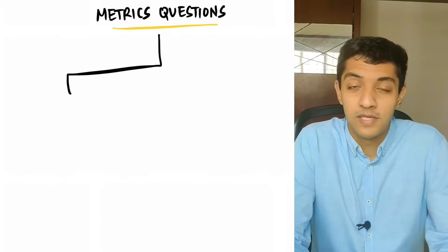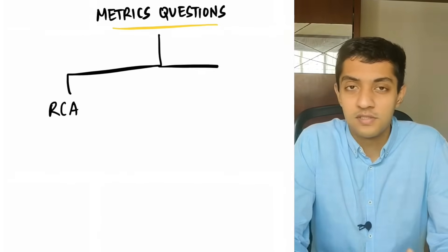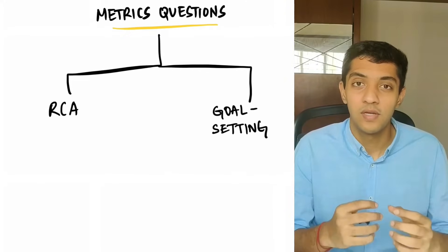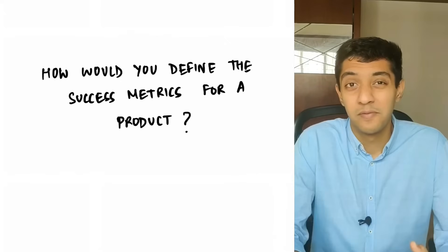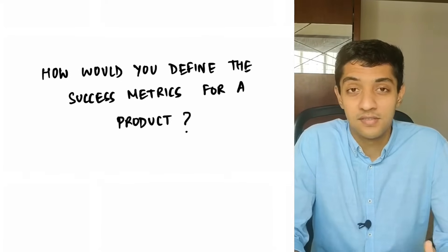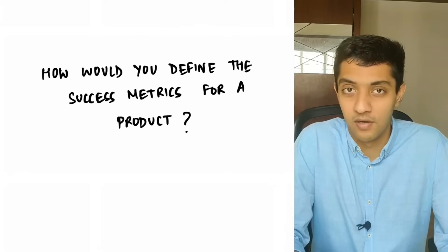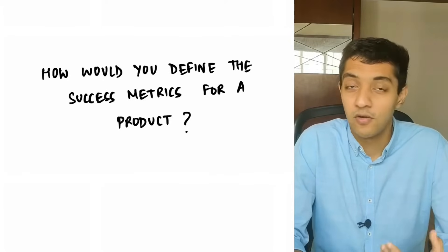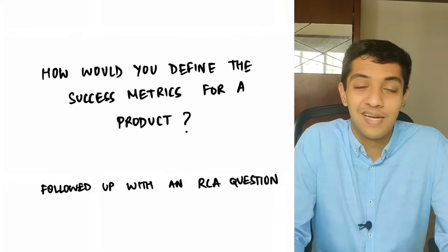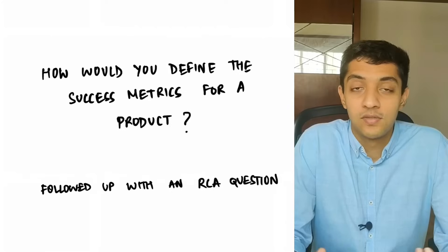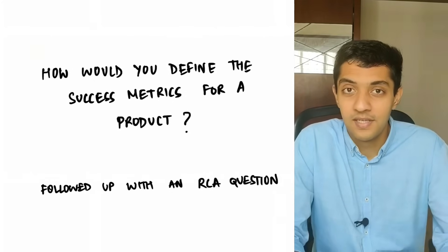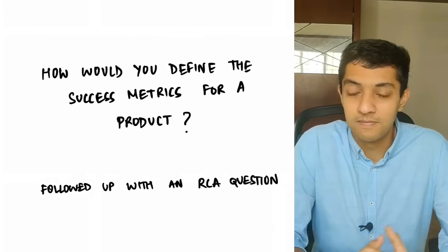Metric space questions generally come in two types. The first is the root cause analysis questions and the second is the goal setting based questions. In today's video, we'll be looking at goal setting based questions. A typical question in this bucket comes in the form of how do you define the success metrics or goals for a particular product, feature, or company. This could also be followed up with a root cause analysis question where you'd be asked to diagnose an unusual behavior or a drop in one of the metrics you've just defined.